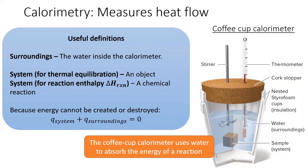It's useful to define the system and the surroundings during a calorimetry experiment. We assume that the calorimeter is isolated from the rest of the universe. In other words, we assume that the calorimeter is perfectly insulated. So the surroundings which absorb the heat is just the water inside the calorimeter. Now, there are two kinds of calorimetry experiment, thermal equilibration and reaction enthalpy. What we consider as the system depends on which type of calorimetry experiment we do, which you'll see shortly.